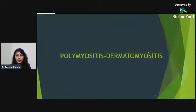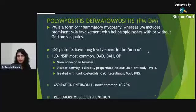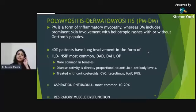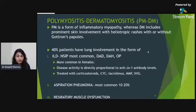Polymyositis is an inflammatory myopathy; dermatomyositis specifically involves the skin with heliotrope rashes and Gottron's papules. 40% of these patients have some form of pulmonary manifestation — NSIP and ILD being most common, but diffuse alveolar hemorrhage and diffuse alveolar damage also occur. More commonly seen in females, and disease extent correlates directly with anti-Jo-1 antibody levels. Corticosteroids and immunosuppressants are the mainstay of treatment. Aspiration pneumonia and respiratory muscle dysfunction are also commonly seen.